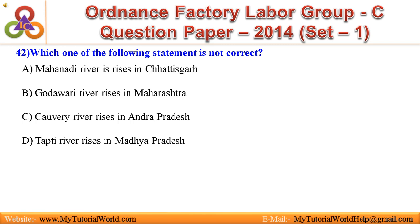42. Which one of the following statements is not correct? A. Mahanadi River rises in Chhattisgarh. B. Godavari River rises in Maharashtra. C. Kaveri River rises in Andhra Pradesh. D. Tapti River rises in Madhya Pradesh. Answer is: Kaveri River rises in Andhra Pradesh.